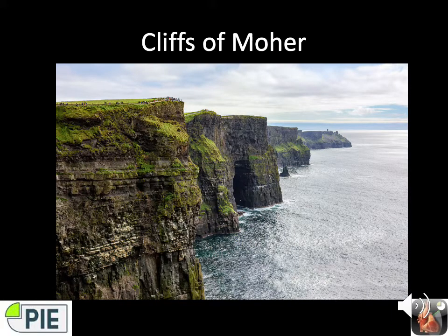Before moving on, let me talk about the Cliffs of Moher — Ireland's most visited natural attraction with over 1.5 million tourists per year. Located on the Wild Atlantic Way just south of Doolin in County Clare, they ascend to over 200 meters and stretch south for 8 kilometers to Hag's Head. The oldest base rock is over 300 million years old. A sea cave in the center was used to film scenes in Harry Potter and the Half-Blood Prince, and the cliffs have been used in other films including Princess Bride.